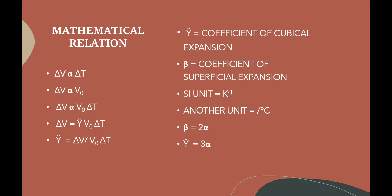Whenever cubical expansion takes place, an increase in length, breadth, as well as thickness is observed, and hence gamma equals thrice of alpha. In cubical expansion, expansion takes place in three directions, while in linear expansion it takes place in only one direction. On combining both, the relationship between alpha, beta, and gamma is 1 : 2 : 3. This is the relationship between all three coefficients of expansion.